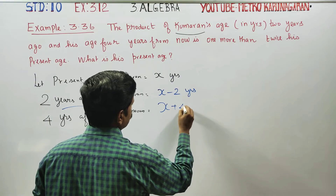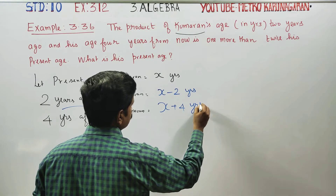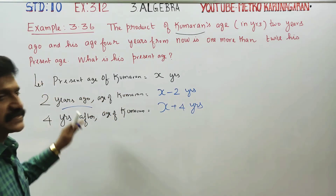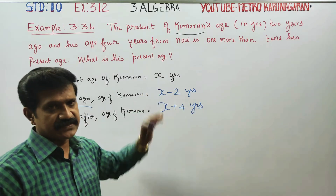So the age four years from now is x plus 4. The present age of Kumaran is x years.